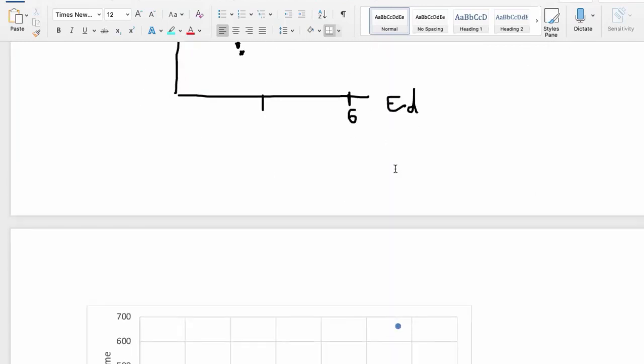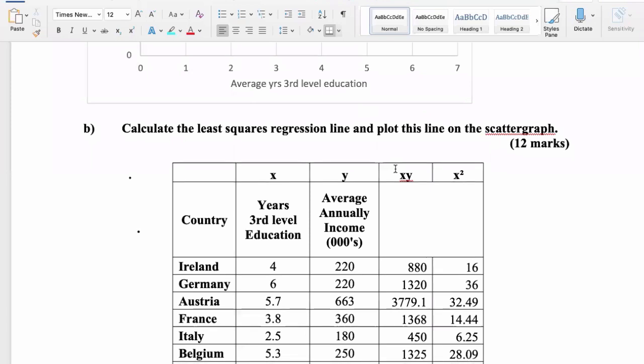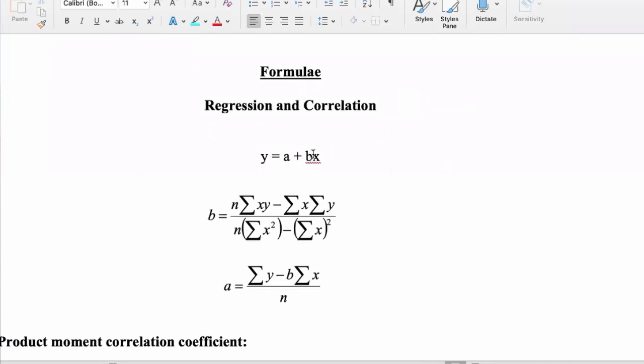Regarding the calculating of the least squares regression equation, you will be given the formula. So always refer to your formula sheet, and it's always going to be on the last page. So y equals a plus bx, that's what we're doing. And while we're asking to get the least squares regression line, we need to calculate this y equals a plus bx. In other words, we need to find a and b, and these are the formulas you're going to use to find a and b.